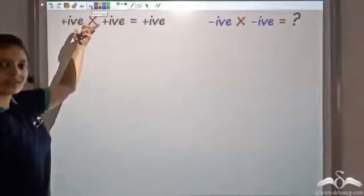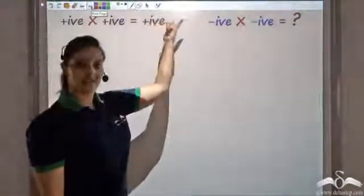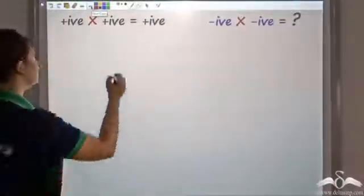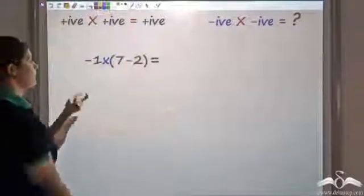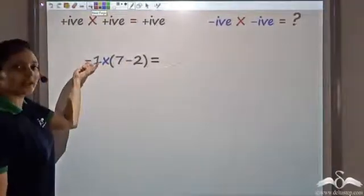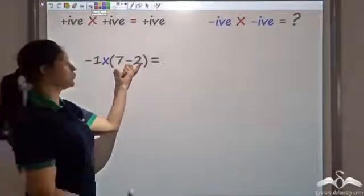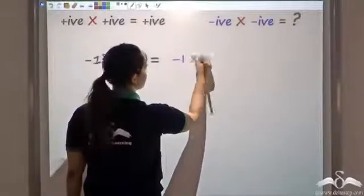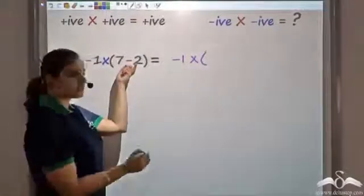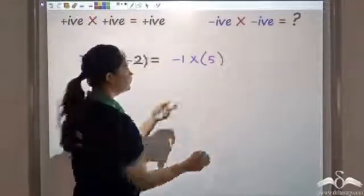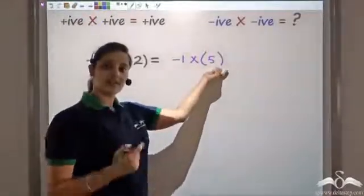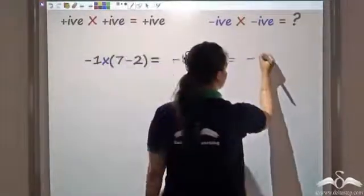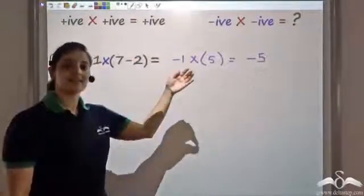We know that two positive numbers when multiplied give us a positive result. What about two negative numbers being multiplied? Let's look at that now. Let's multiply negative one with seven minus two. If I solve this directly, seven minus two equals five, and negative into positive gives a negative result. One fives are five, so I get the answer as negative five.